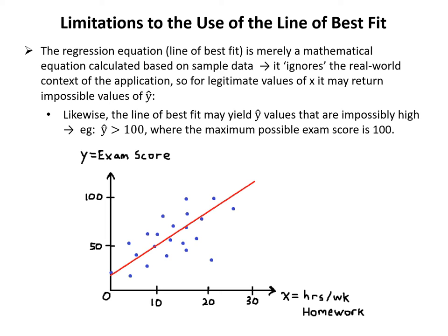Likewise, the line of best fit may yield y-hat values that are impossibly high — for example, y-hat greater than 100 where the maximum possible exam score is 100. As shown in the diagram, if we extrapolate the line of best fit beyond the actual scatter plot points, its positive slope means that at some x value the predicted y exceeds 100, implying an impossible score.